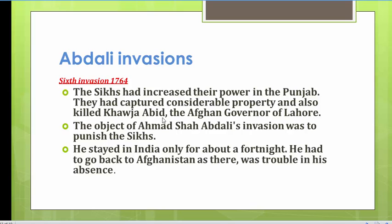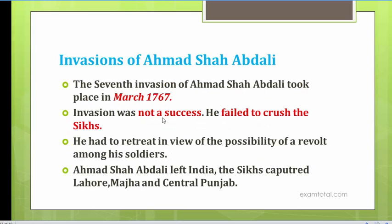The sixth invasion took place in 1764. Abdali again invaded for the seventh time in March 1767, with the same reason of crushing the Sikhs — but again he failed. He had to retreat because of revolts in Afghanistan, and the Sikhs recaptured Lahore and the areas of Punjab, Mahaja, and central Punjab. However, he was able to capture a few areas of Peshawar. Overall, during this invasion he was not able to crush the Sikhs.